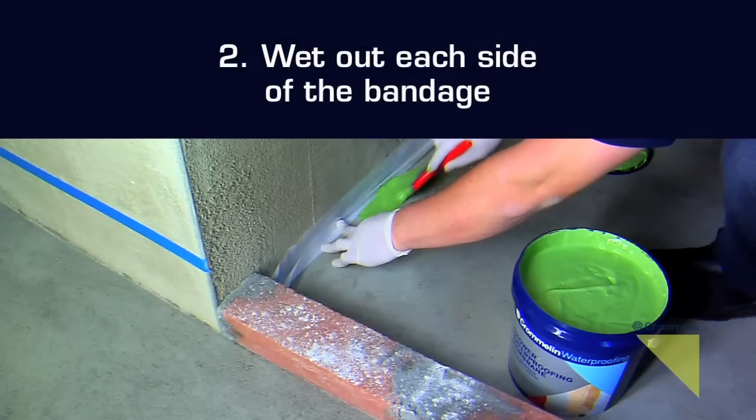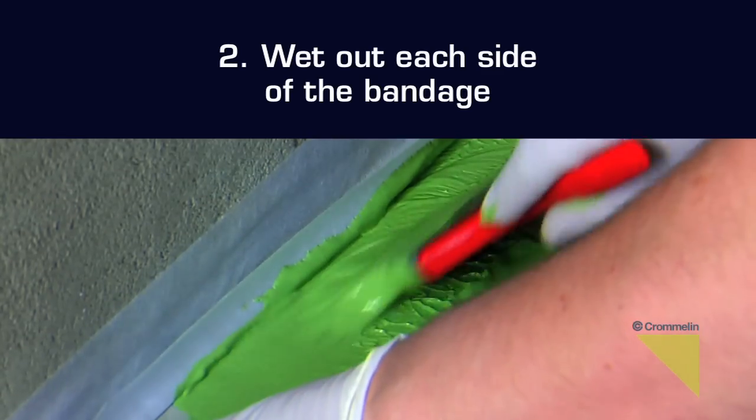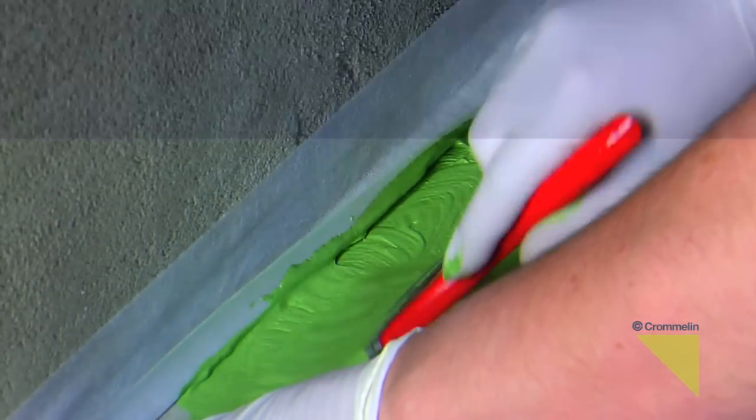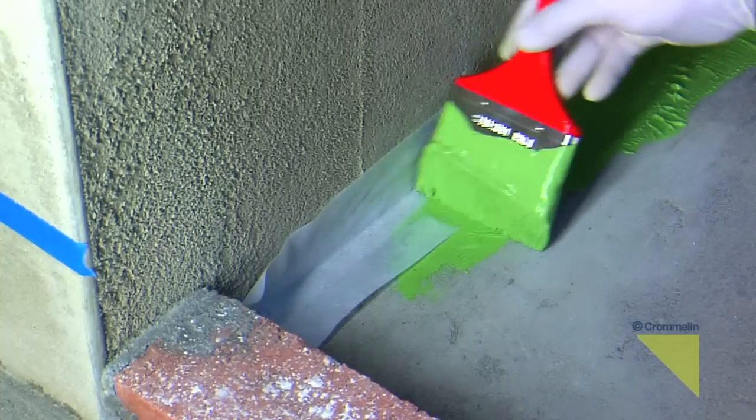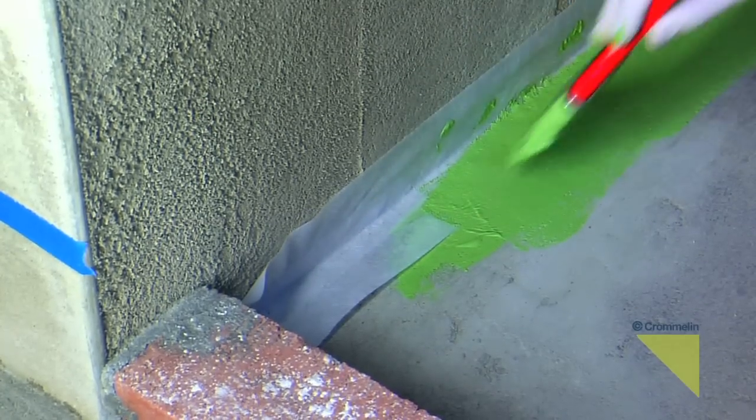Step 2: Using the membrane, wet out each side of the bandage by brushing the underside with sufficient membrane. This should fully soak through the bandage, promoting adhesion.